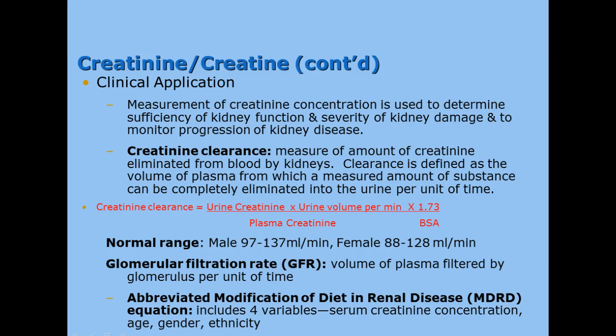This gives us a glomerular filtration rate, which is the volume of plasma filtered in the glomerulus per unit of time — which is where we get the mL/min from.